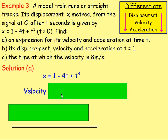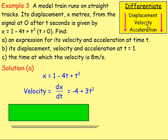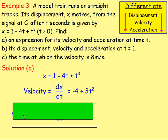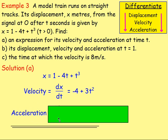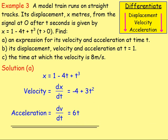To find the velocity, think: how do you get from displacement to velocity? You differentiate. So we differentiate x: dx/dt = −4 + 3t². To get the acceleration, differentiate the velocity. So acceleration = dv/dt. Differentiating gives 6t. So that is an expression for the velocity and the acceleration.